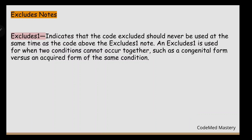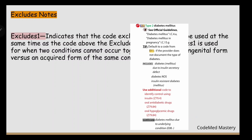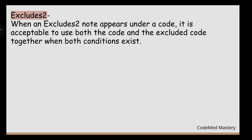Next is Excludes 1. Excludes 1 indicates that the excluded code should never be used at the same time as the code above the Excludes 1 note. It is used when two conditions cannot occur together, such as a congenital form versus an acquired form. For example, under E11 (Type 2 Diabetes Mellitus), the Excludes 1 note lists Diabetes Mellitus Due to Underlying Condition (E08), meaning E08 should never be coded together with E11 because the two conditions cannot occur simultaneously.